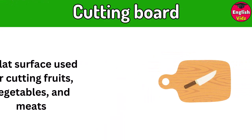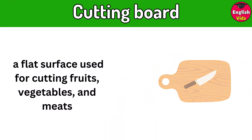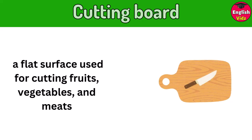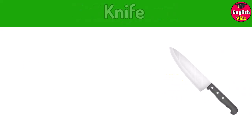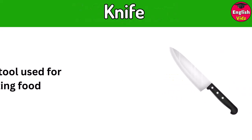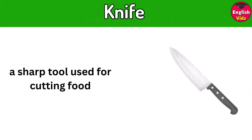Cutting board. A flat surface used for cutting fruits, vegetables, and meats. Knife. A sharp tool used for cutting food.